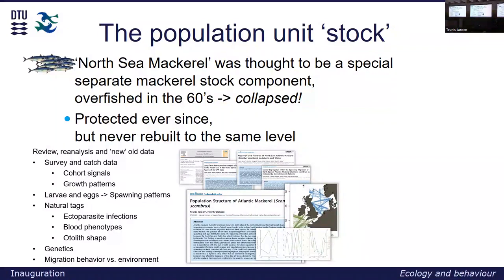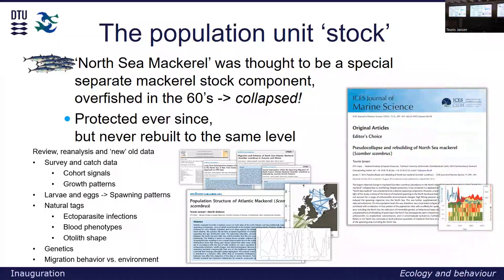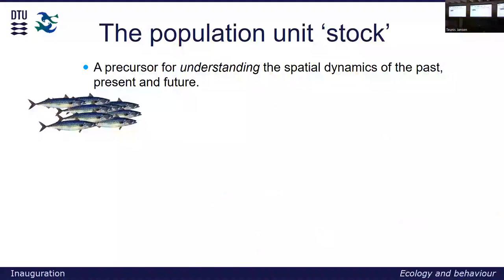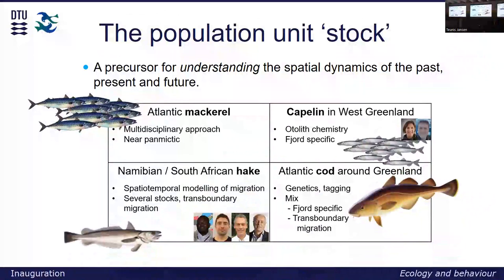And that had changed. In the light of that changed view on the North East Atlantic mackerel, all the old data actually made much more sense. I could kind of rewrite the history of the North Sea mackerel — it was not a stock that collapsed, it was merely a change in distribution of a spatially highly dynamic species. And that is what we have seen again in Greenland in most recent years. You could say I actually more or less followed the mackerel to Greenland. Knowledge on ecology and behaviour is a precursor for understanding the spatial dynamics of the past, present, and the future — so important for management in the end.